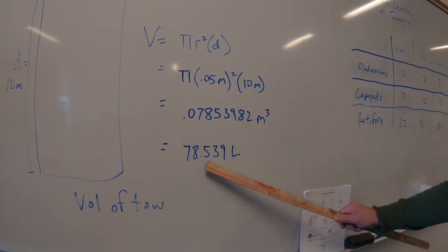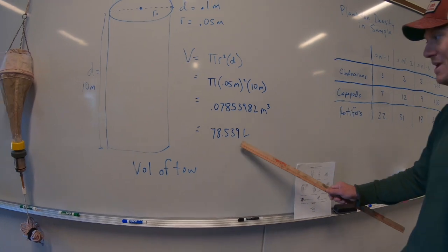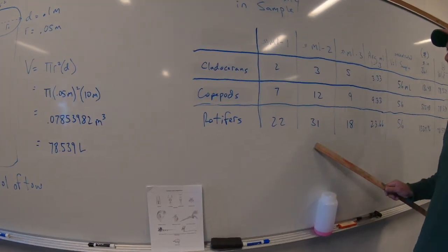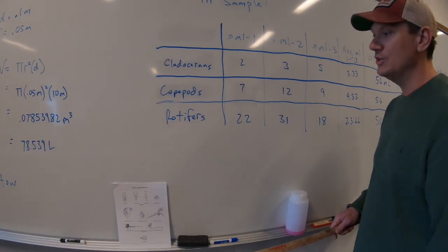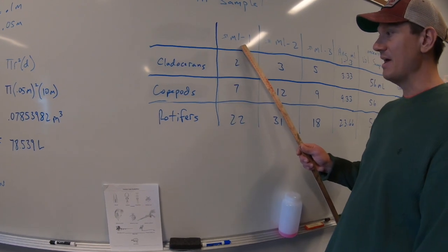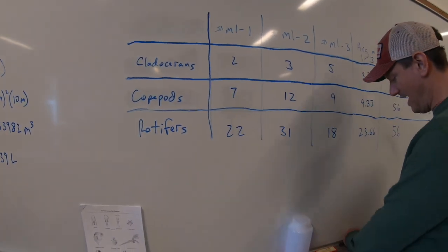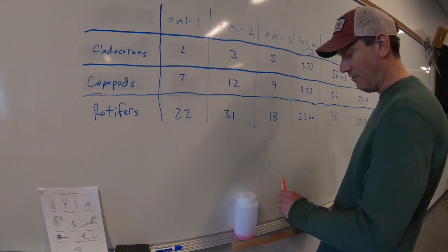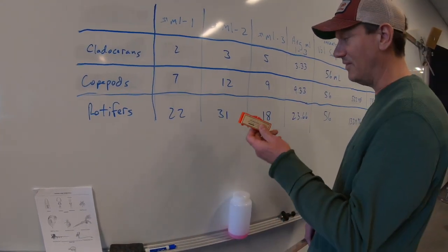Now, it's important not to lose these decimal points yet because we're not finished with our calculations. All right, so next up what we're going to do, you've already looked at your sample. You're going to do it in triplicate. You're going to use the Henson Stumpel pipette and the Sedgwick Rafter cell. We already talked about this in the video.